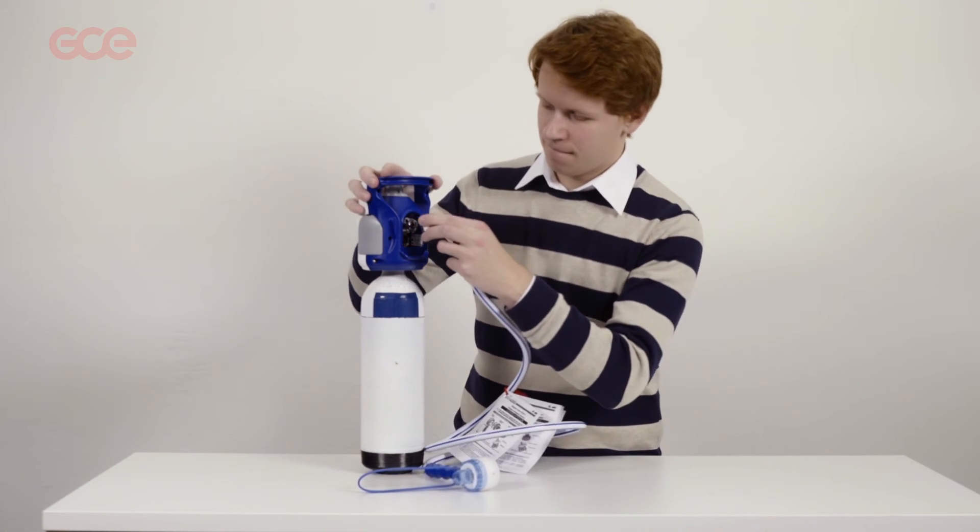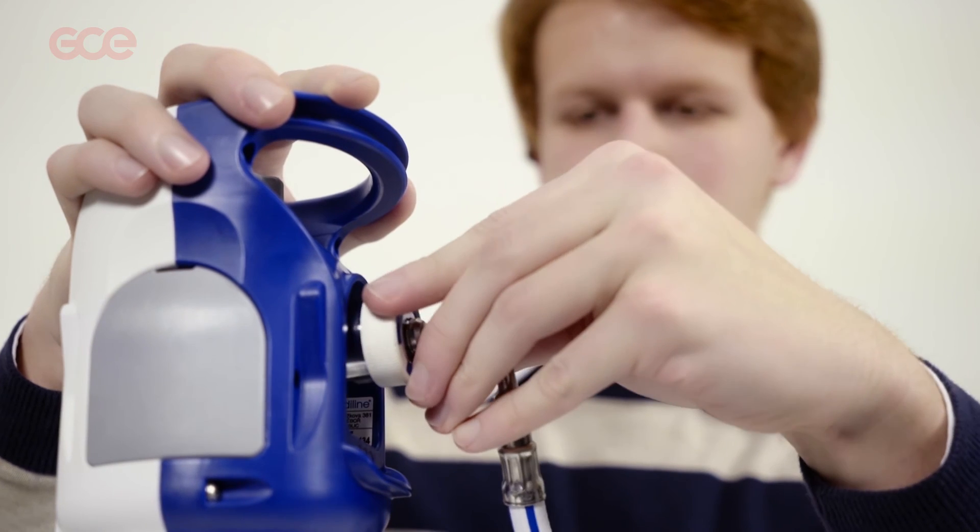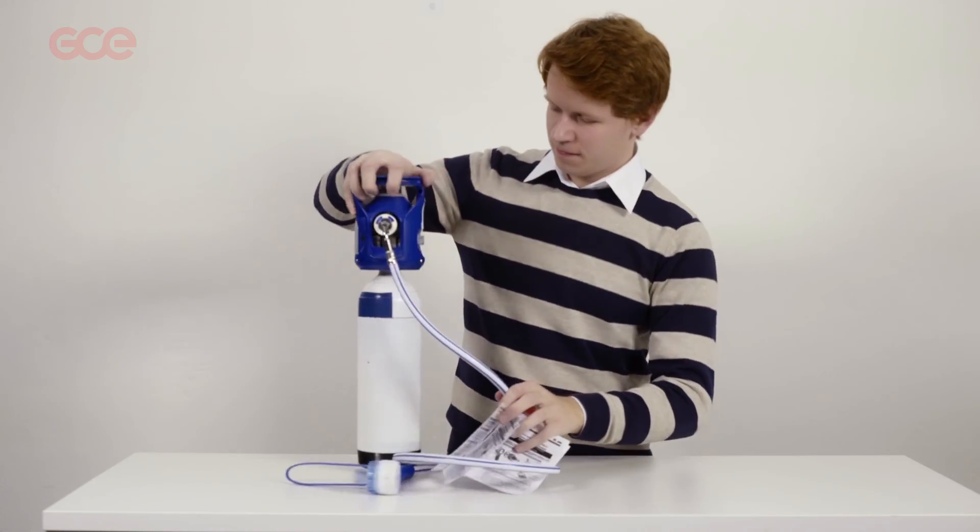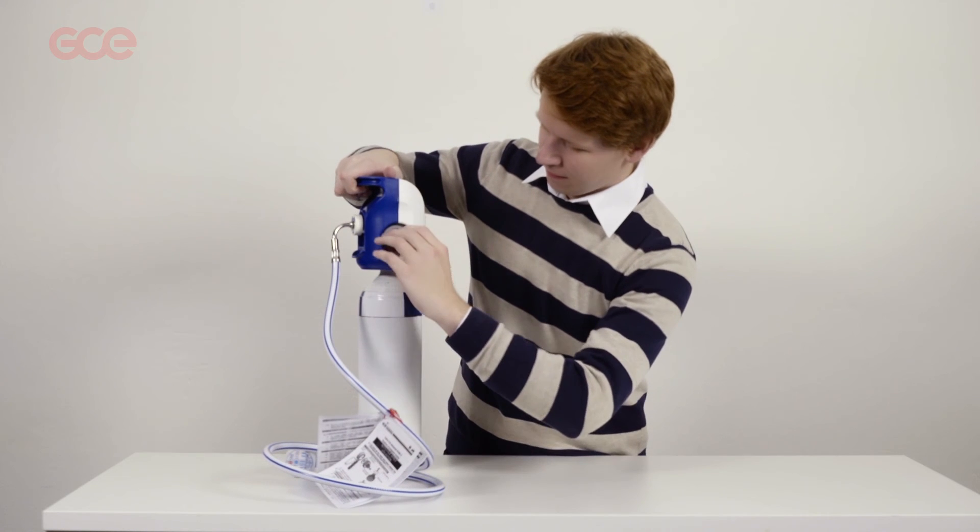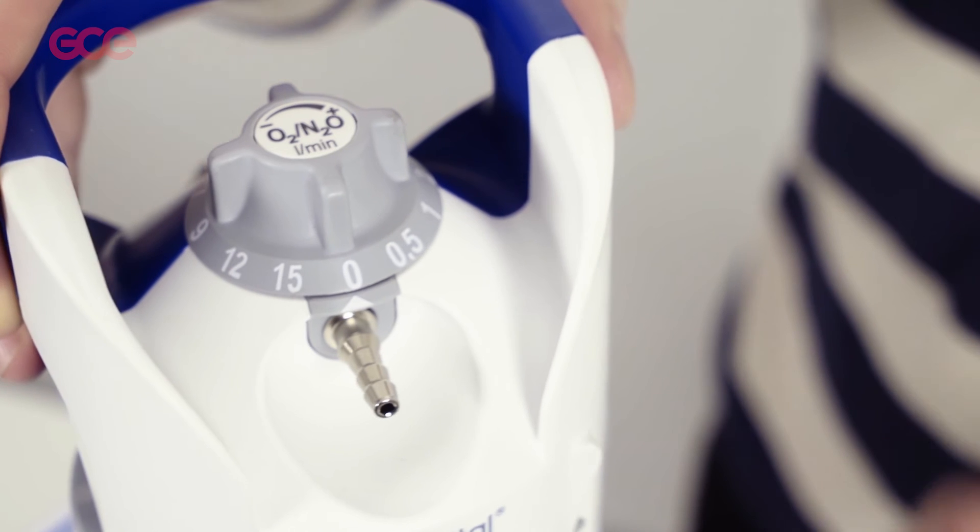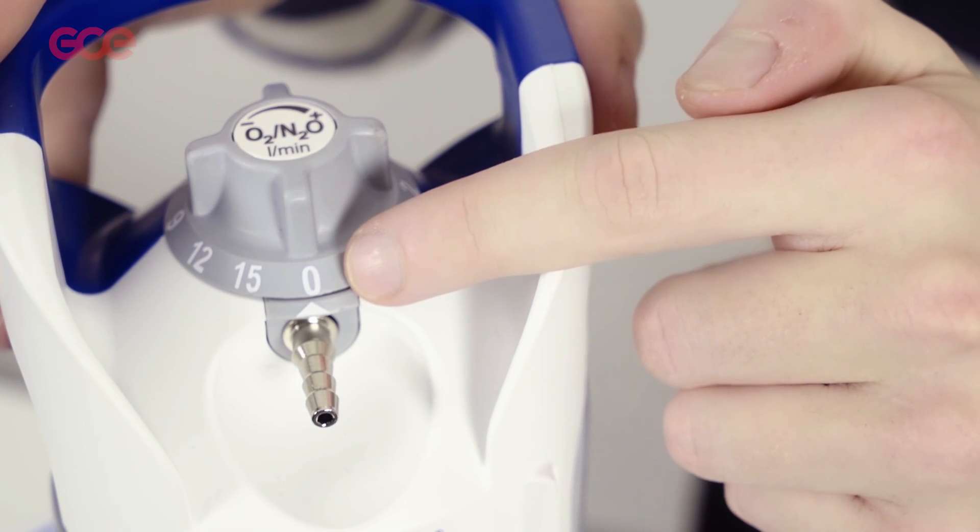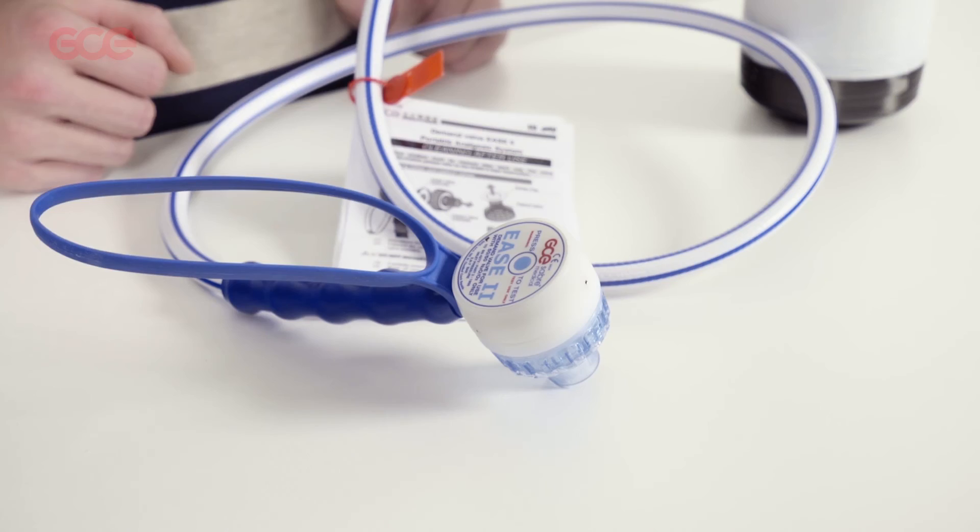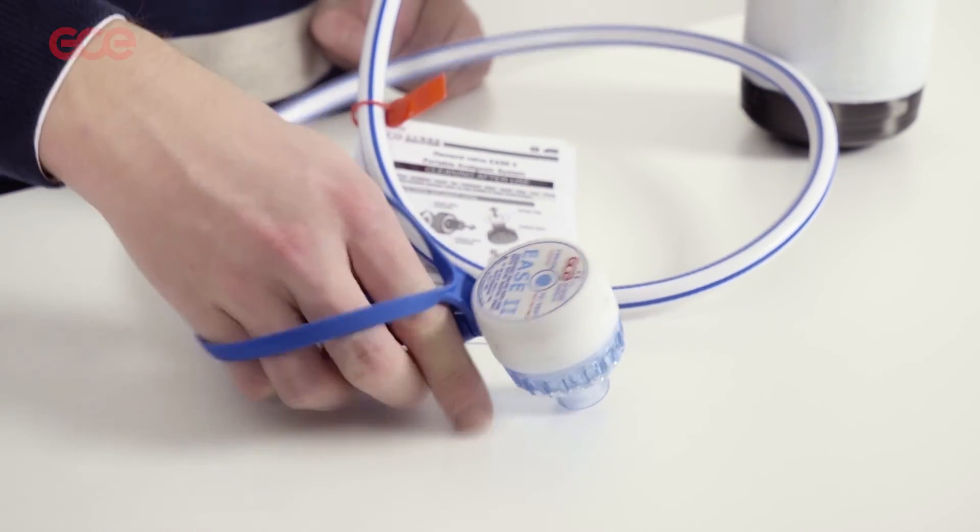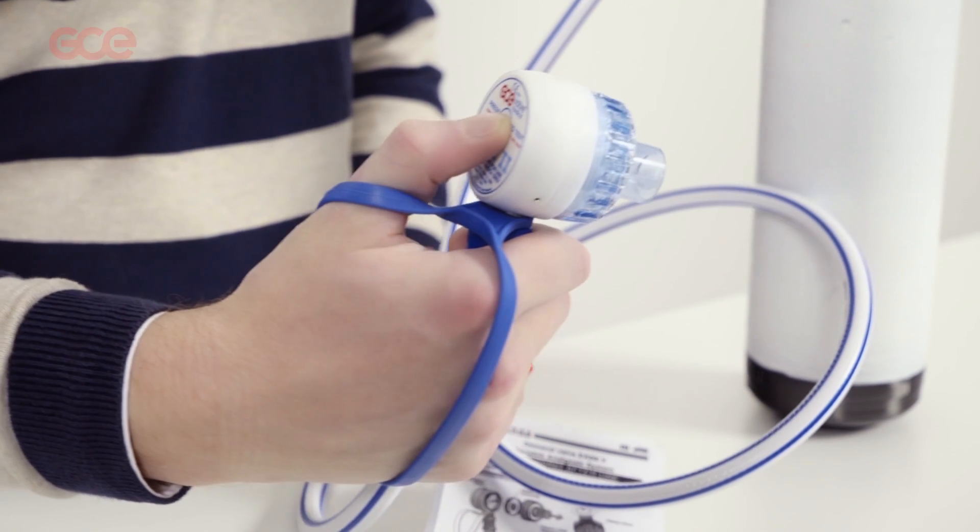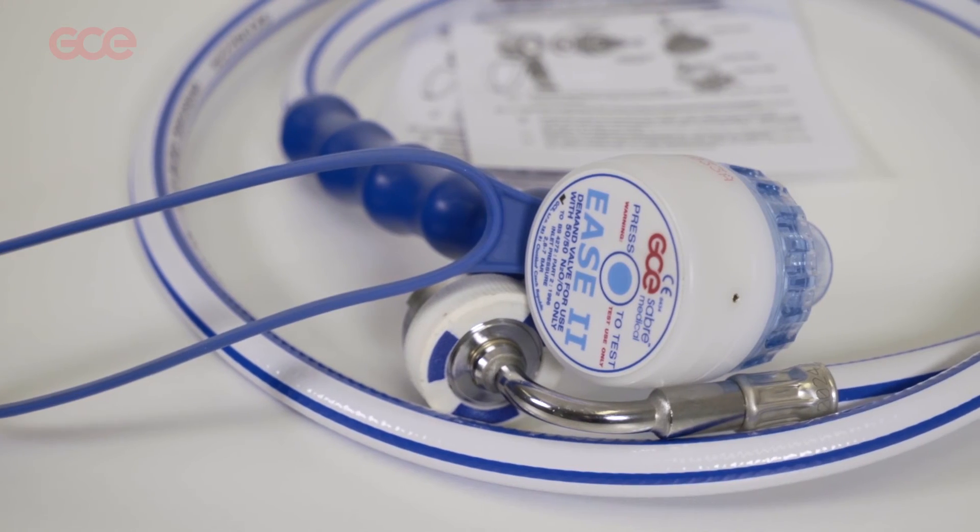Connect the probe to the source of gas. Open the bottle. Caution: do not open the flow selector. It needs to stay on 0 litres per minute for setup. Units should be checked by lightly pressing the test button. Gas should be heard flowing through the mask or mouthpiece.